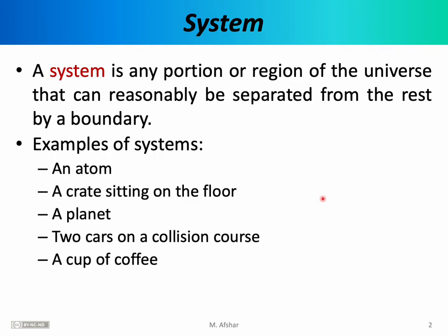So you can see the word system is quite generic — it could refer to almost anything. An atom could be a system. A crate sitting on the floor could be a system. The box by itself could be a system, but you could also have the crate and the floor together be a system. A planet could be a system, a planet and its moon together, or the moon alone. You can even have an entire solar system as your system. Two cars on a collision course could be a system, or either car alone by itself. A cup of coffee can be a system, or an H₂O molecule inside that cup of coffee could be a system.